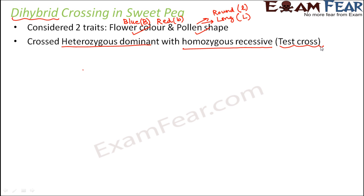A test cross is generally used to determine the genotype of an unknown organism. For example, if we cross an unknown organism with a homozygous recessive, we can determine whether the unknown is heterozygous dominant or homozygous dominant.